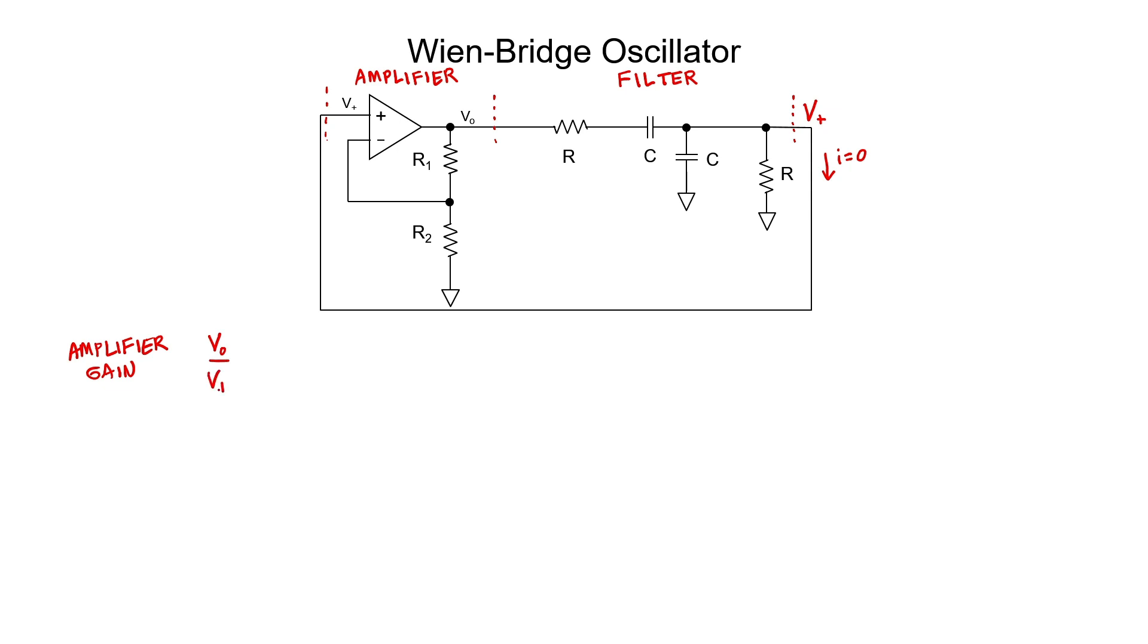First let's calculate the gain of the amplifier. The output is V naught and the input is V plus. Let's now calculate the transfer function of this particular filter.